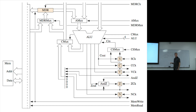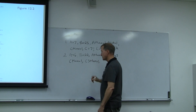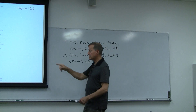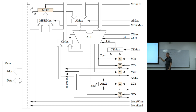Next we need to set CSMux. The CSMux controls whether the carry input to the ALU comes from the C bit or from the S shadow carry bit. We set CSMux equals 1 to route from the shadow carry S bit, which we saved in the previous cycle. That carry is what we need as the carry-in for the high byte addition.